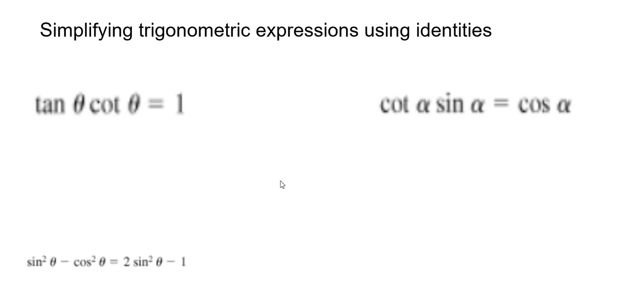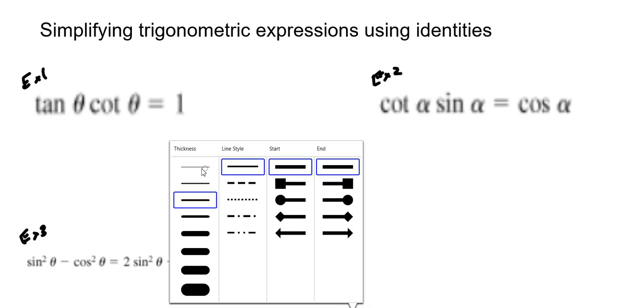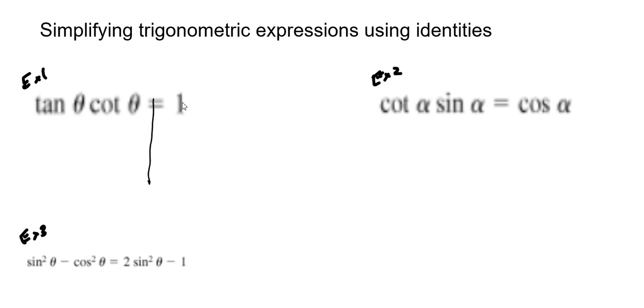We have another video on how to simplify trigonometric expressions using identities. I have three different examples, and in each one we're practicing to simplify the left side so it equals the right. How can we do this? If you watched my previous videos, you use algebra if you can, and if you can't use algebra, sometimes it's good to take whatever you're given and convert it to sine and cosine.